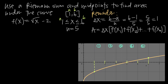We've been asked to use midpoints to find area, so the next step is to find the midpoint of each subinterval. Halfway between 1 and 2 is 3/2. Halfway between 2 and 3 is 5/2. Halfway between 3 and 4 is 7/2. Halfway between 4 and 5 is 9/2. And halfway between 5 and 6 is 11/2.